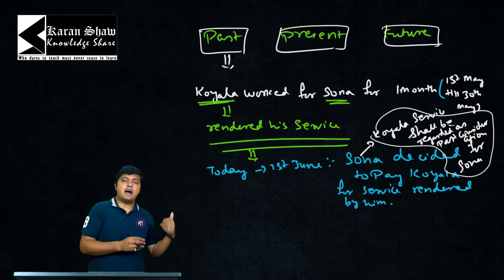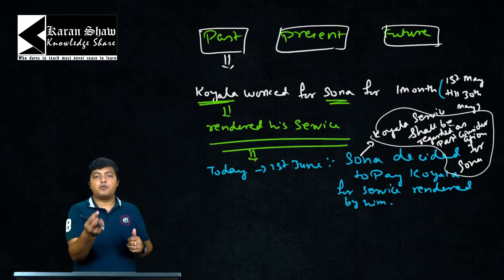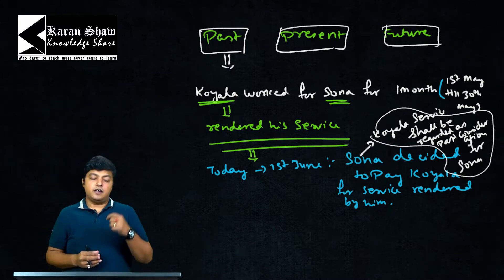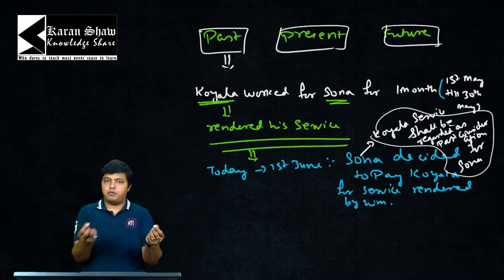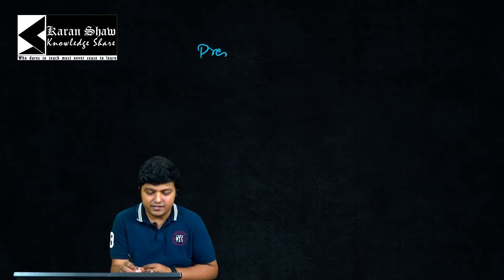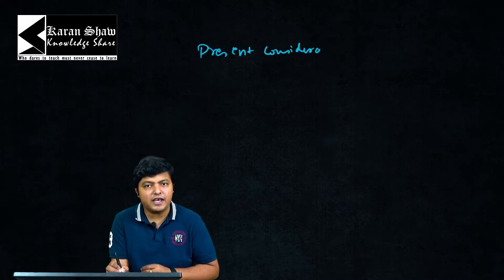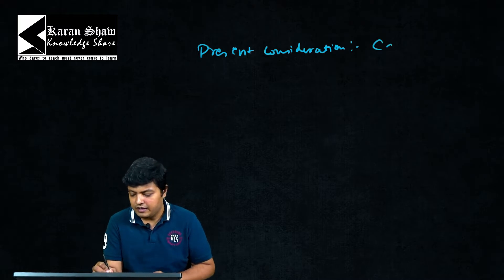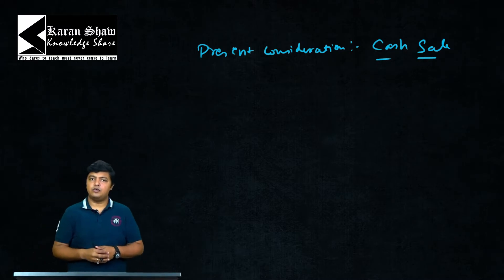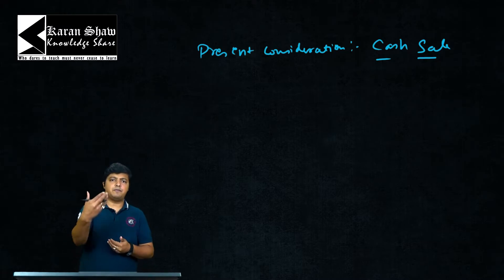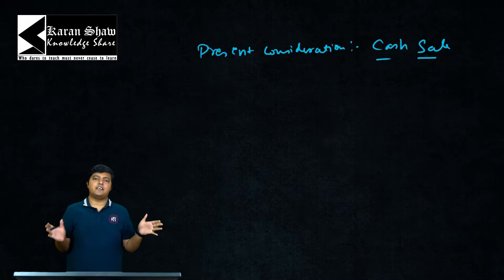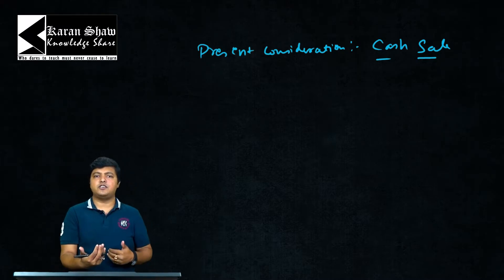Past consideration: when you do some work in the past for which payment is made later, the service you rendered is called past consideration. Also note that desire of the promisor still applies — if Koila had volunteered the service without Sona's desire, Sona would not be obligated to pay. Now let's discuss present consideration. The easiest and best example of present consideration is a cash sale.